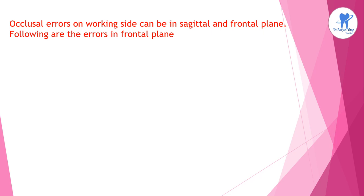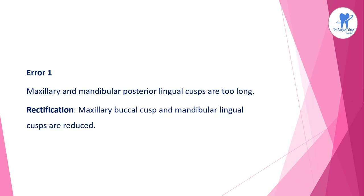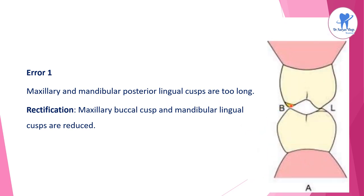Occlusal errors on the working side can occur in the sagittal as well as the frontal plane. These are the errors in the frontal plane: a longer buccal cusp on one tooth along with a longer lingual cusp of its antagonist — long buccal cusp and long lingual cusp. When maxillary and mandibular posterior lingual cusps are too long, rectification is by reducing the maxillary buccal cusp and mandibular lingual cusp.